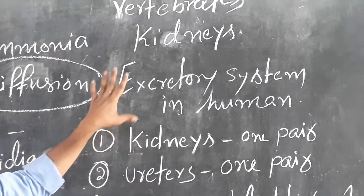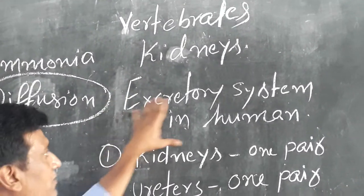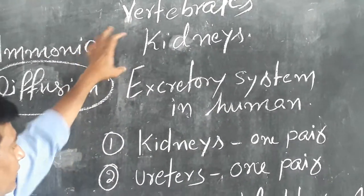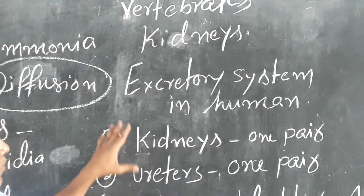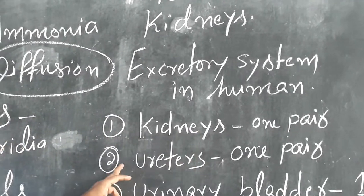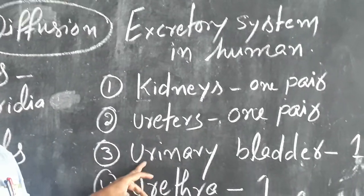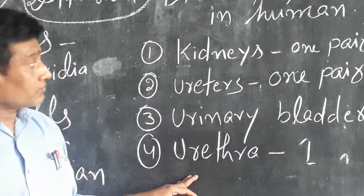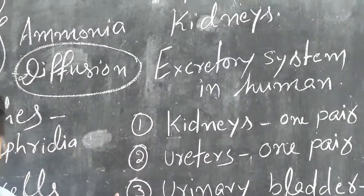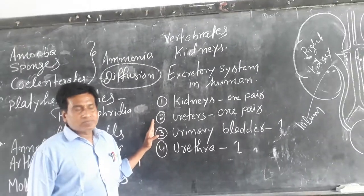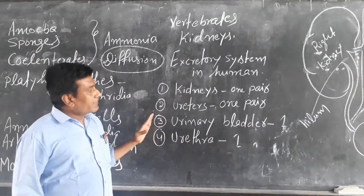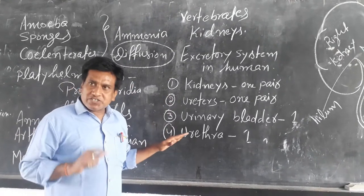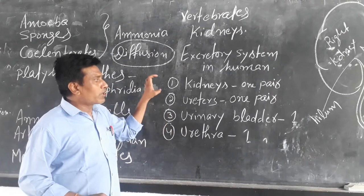Now I am going to discuss the excretory system in humans. Humans belong to vertebrates and they have one pair of kidneys, one pair of ureters, and a single urinary bladder and urethra. These are the organs present in vertebrates and all present in humans, and they constitute a specialized excretory system.